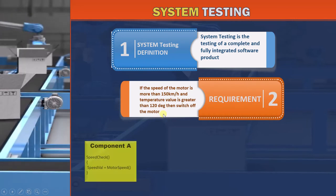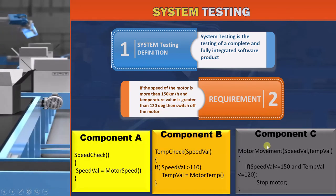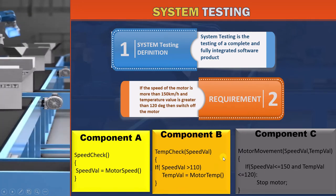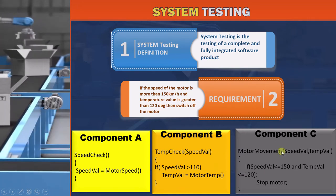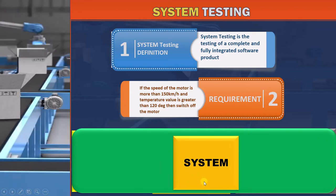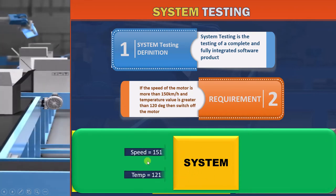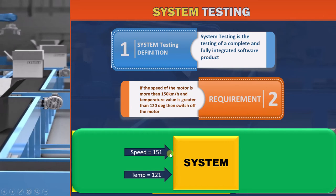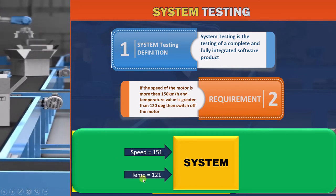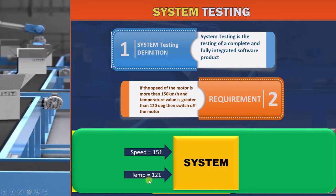We know that there are 3 components to the code written for this requirement. But when we are performing system testing, we don't care about the components. We only care about the complete system. What we need is to find the values that are of importance to the system. Here there are 2 important values: the value of the speed and the value of the temperature.